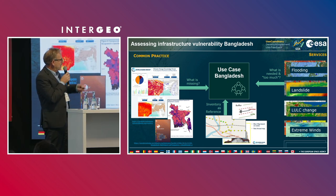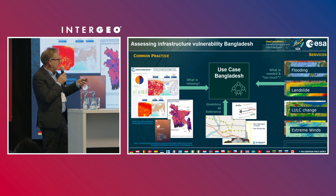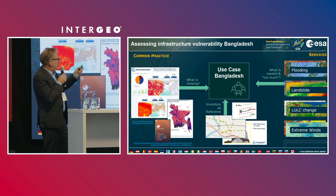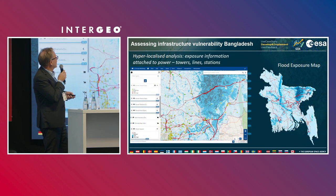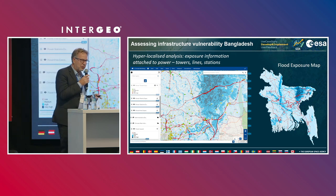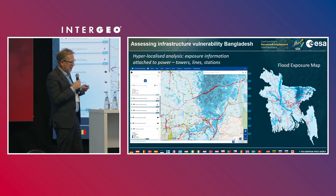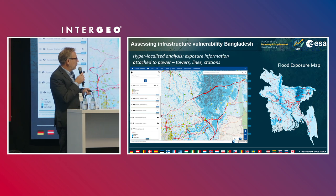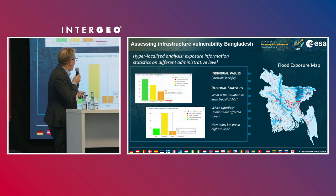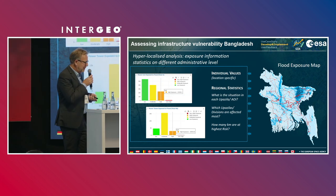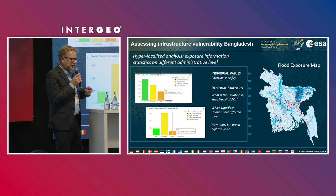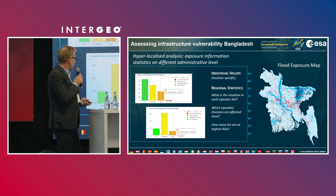Here we have all this information about the environment — land cover, flooding and landslide — combined with Earth observation data to have the full picture of the situation. In this example from Bangladesh, we have power line and transmission line information, and we combine it with the exposure to natural hazards. We then get information about where the highly exposed assets are and what kind of protection measures should be planned, delivering information to planners and investors to protect energy assets against natural hazards.